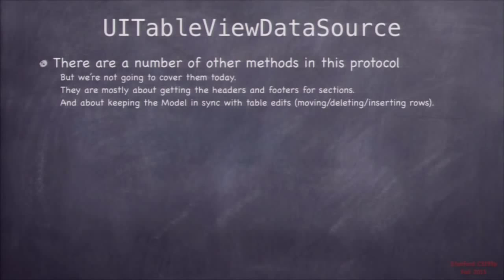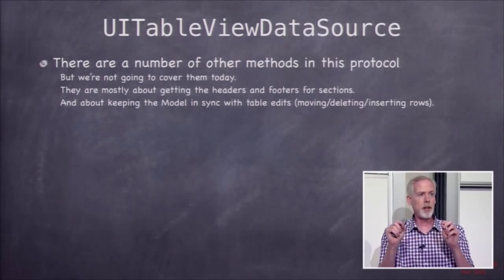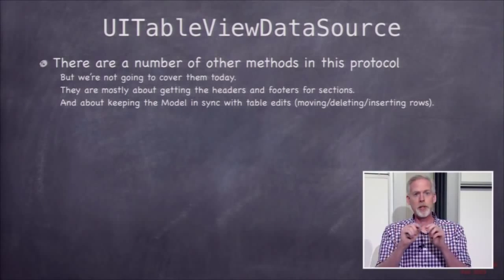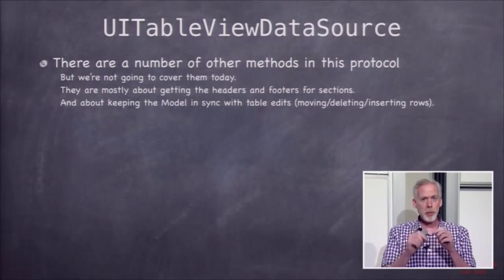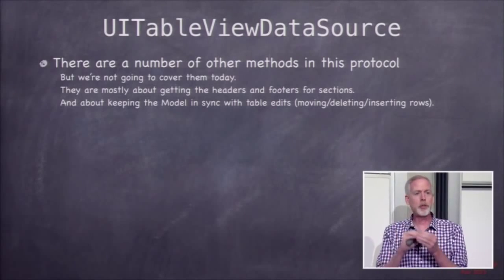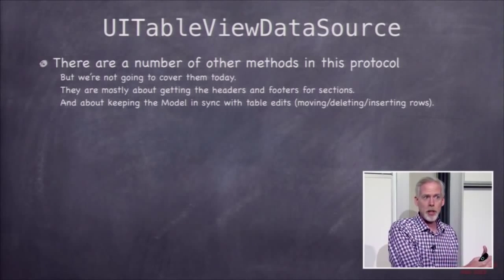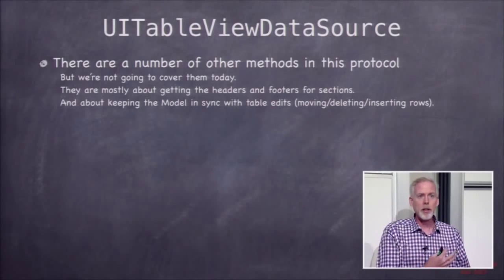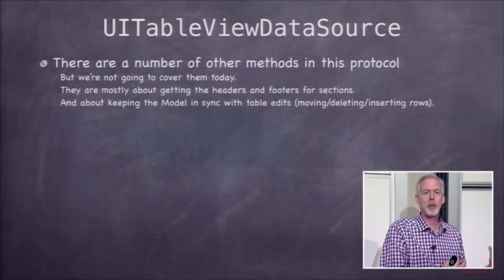There are other methods in the data source protocol — they're mostly about getting titles for headers and footers. You will need the one that returns the string for a header, because you're going to have a section header — in your homework this will be the name of the country. There are also methods for editing: rows can be removed, moved around, changed in order, and all that has to be kept in sync with the model. There are methods in the data source protocol that let you know when things are happening with rows moving and deleting.